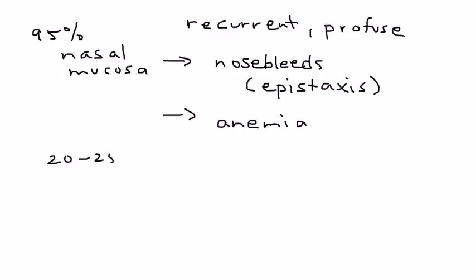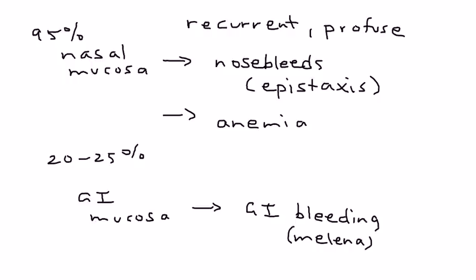About twenty to twenty-five percent of patients with this syndrome can have those telangiectasias that are in the GI mucosa rupture and bleed. When that happens, it causes GI bleeding and sometimes blood in the stool, known as melena.